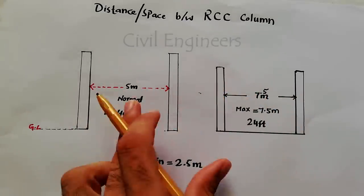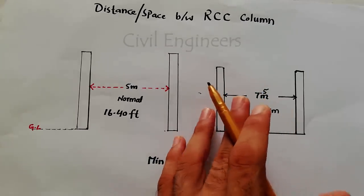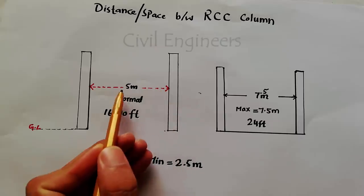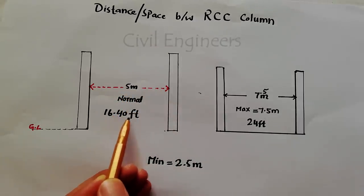But remember, for normal or domestic houses, we can use normal distance between two columns, just 5 meter which is equal to 16.40 feet.